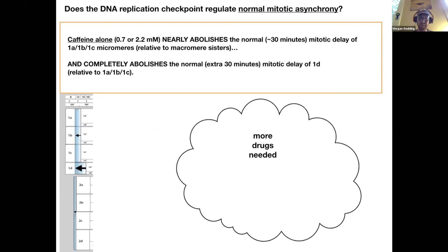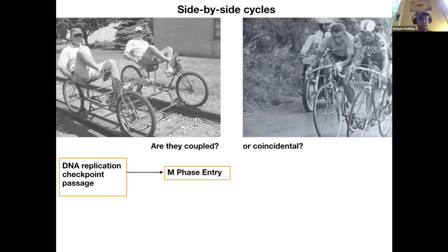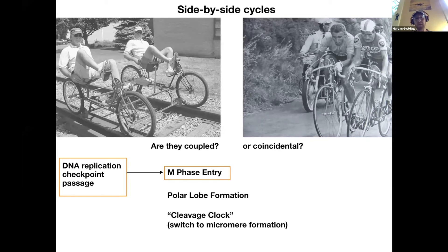The last topic I want to ask about is coordinating the cell cycles with these developmental events. We want these things to reach the finish line simultaneously. So are they mechanically coupled or not? We know there's a DNA replication checkpoint and it works in the early embryo. But does it have anything to do with the scheduling of polar lobe formation? And does it have anything to do with the form of cell division, which is regulated in a time dependent way, especially switching to micromere formation?